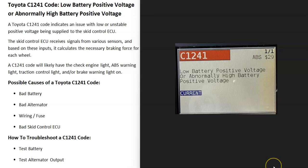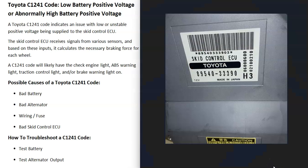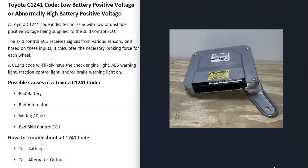There's a computer module called the skid control ECU which receives inputs from different sensors — wheel speed sensors, the brake pedal, and things like this — and it can adjust the way the brakes are being applied. This helps the driver maintain the vehicle in less-than-ideal road conditions. For example, if it's raining and the wheels start to skid, it can help straighten out the tires and help the driver control the vehicle. When you're getting a C1241 code, the power going to the skid control ECU has dropped too low or is not correct.